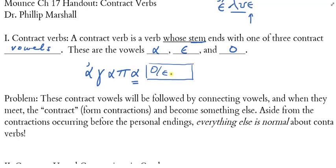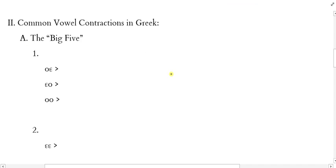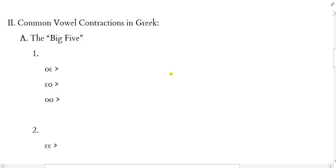The problem is that contract vowels will be followed by connecting vowels, which are then followed by personal endings. When the contract vowel — alpha, epsilon, or omicron — interacts with a connecting vowel (omicron or epsilon), we're going to have something called contraction. These two vowels come together and contract, becoming another vowel — usually a diphthong. Aside from these contractions, everything else is normal about contract verbs.